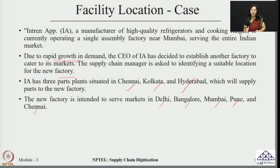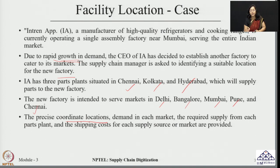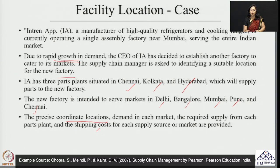So there are 3 suppliers and 5 customers for this factory. We have also been given another set of information: the coordinate locations of every market and supplier are known to us, the demand from each market and the supply from each parts plant are given, and the shipping cost for each supply source and market is also provided. Considering these cost, demand, supply, and coordinate locations, we now have to decide where to make the new factory.